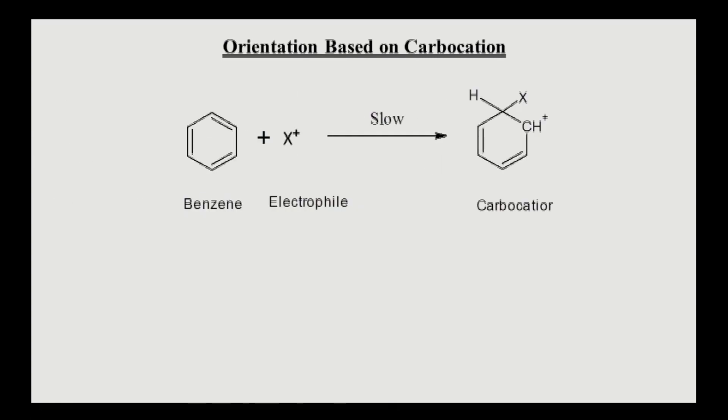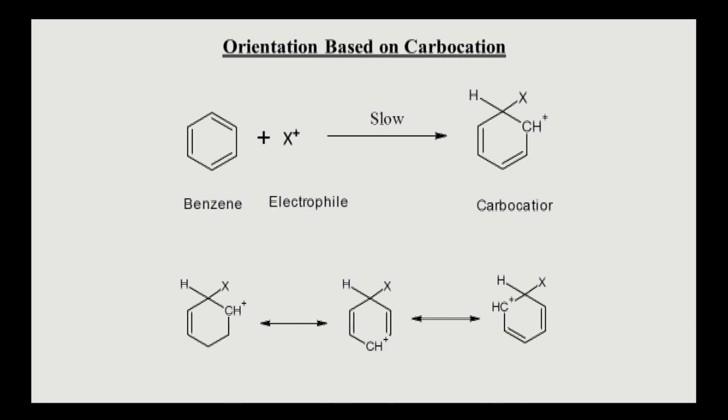Today's topic is the theory of reactivity. In every electrophilic aromatic substitution reaction, the first step is the attack of an electrophile on the benzene ring to form a carbocation. This is a slow step, which is why it is the rate-determining step. The carbocation is resonance stabilized by forming various resonance hybrid structures.